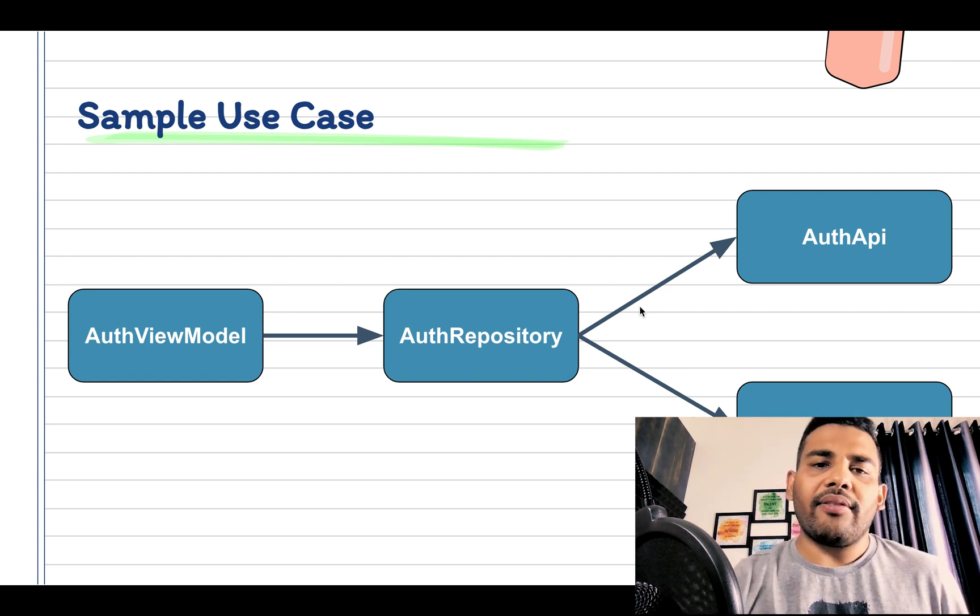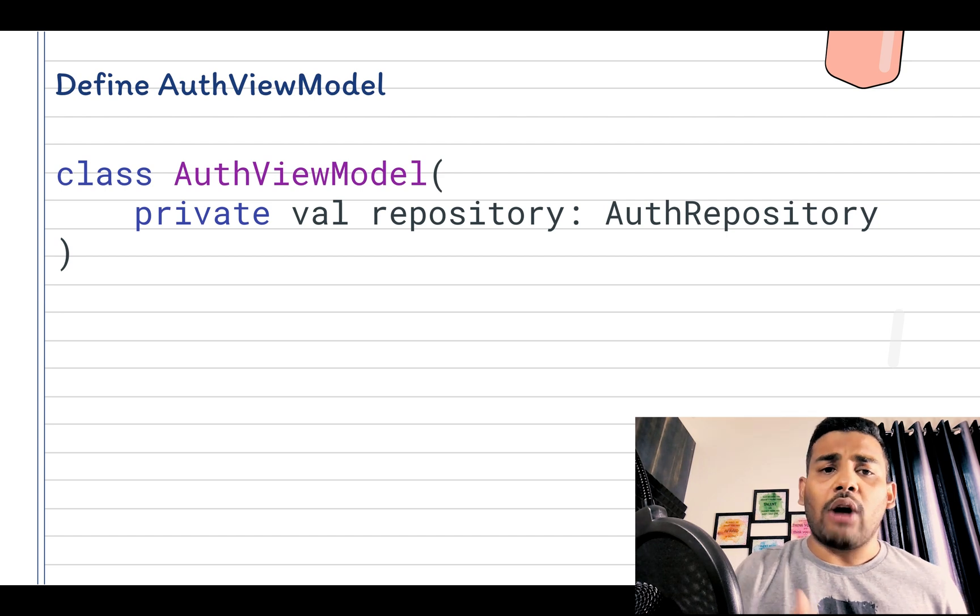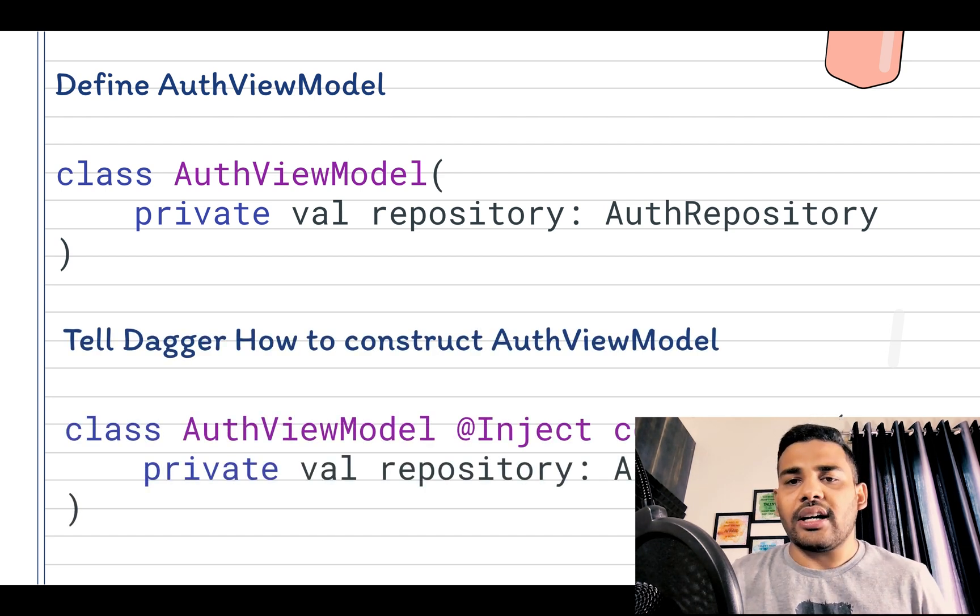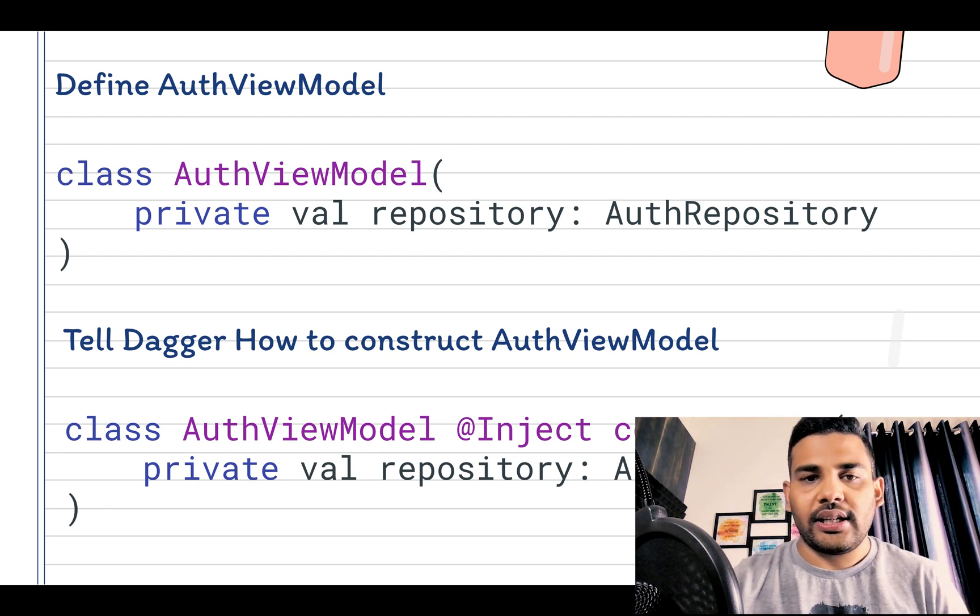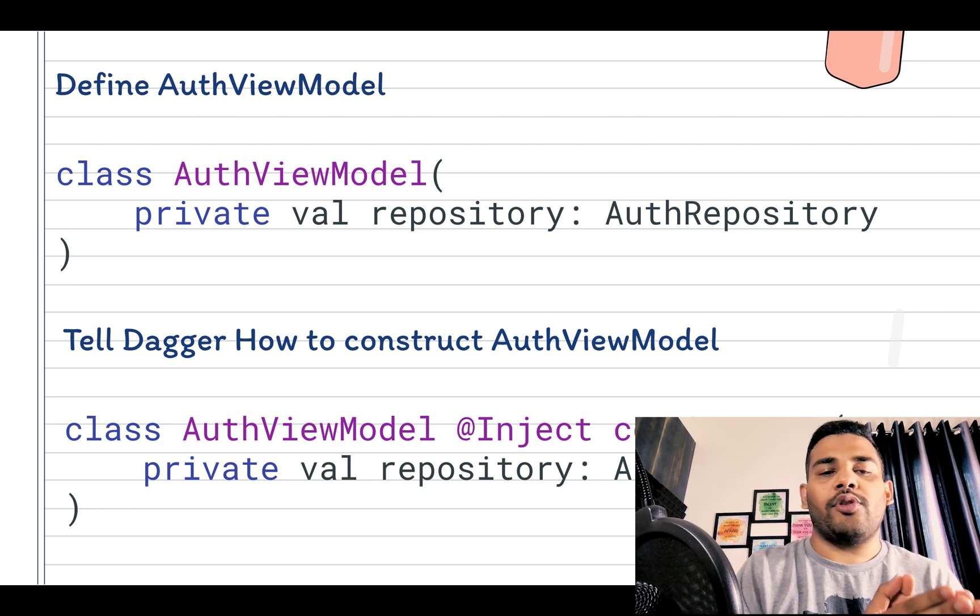Now here we have defined AuthViewModel like this, but currently Dagger does not know how to create AuthViewModel. That is why we need to tell Dagger with the @Inject annotation that you have to create this dependency, and now Dagger knows that it has to build AuthViewModel.